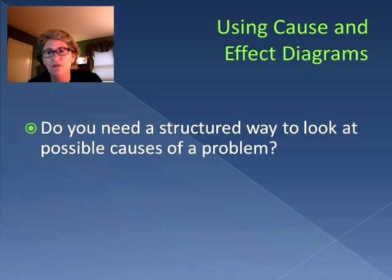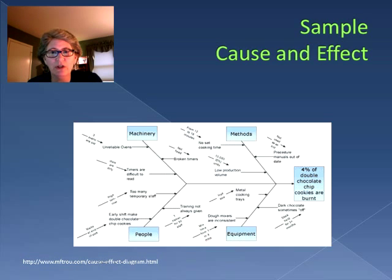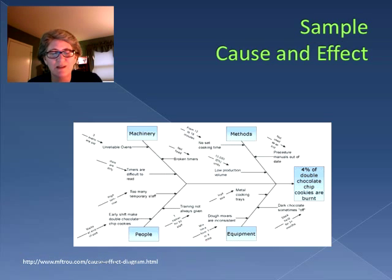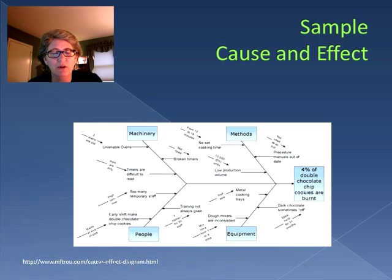Here we have a diagram looking at the problem that 4% of double chocolate chip cookies are burnt. We're going to look at a variety of different reasons why this could happen. In this example we have a four-spine diagram covering machinery, methods, equipment, and people.